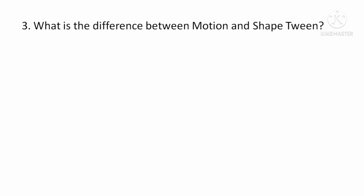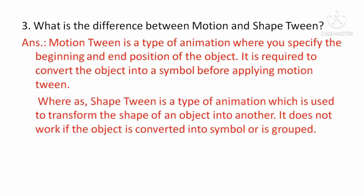What is the difference between motion tween and shape tween? Motion tween is a type of animation where you specify the beginning and end position of the object. Motion tween को apply करने से पहले जरूरी है कि आप object को symbol में convert कर लें. Whereas shape tween is a type of animation used to transform the shape of an object into another shape. यदि आप object को group किये हैं या उसे symbol में change कर दिये हैं तो आप shape tween का use नहीं कर पाएंगे.